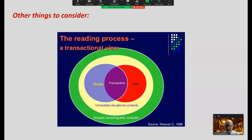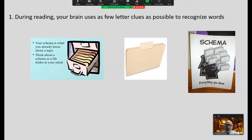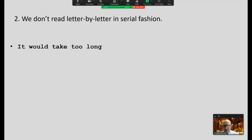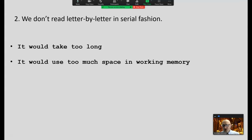During the act of reading, your brain actually uses as few letter clues as possible to recognize words. We don't look at all the letters — we don't need all the letters. We use a schema, which is a file folder in your head related to knowledge. Reading letter-by-letter would take far too long and use too much space in working memory. We use minimal letter clues, and our eyes do not stop on every word.